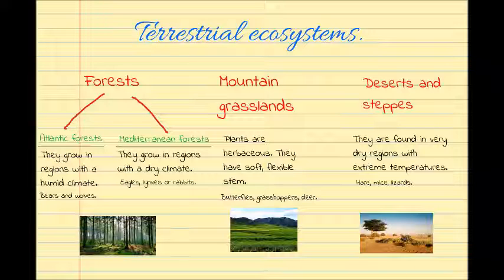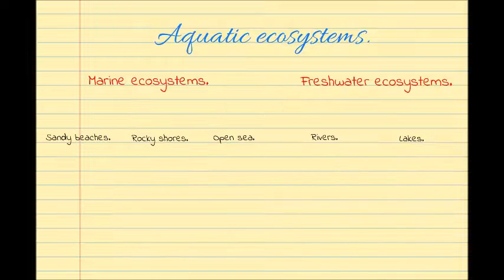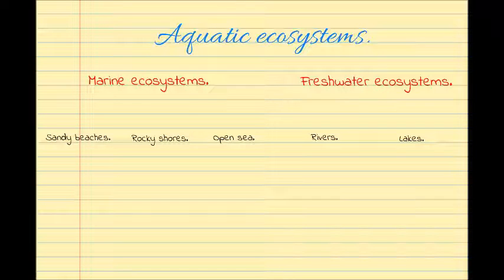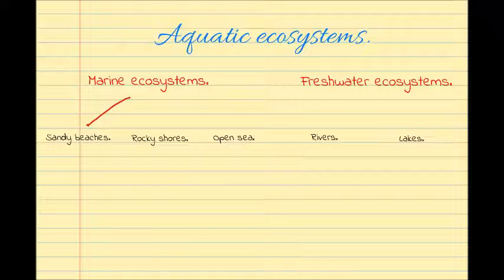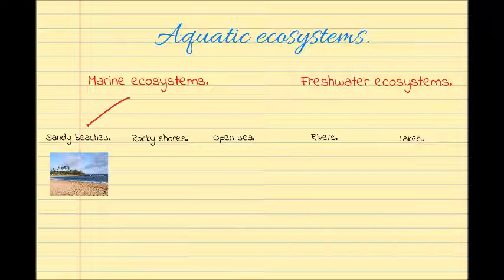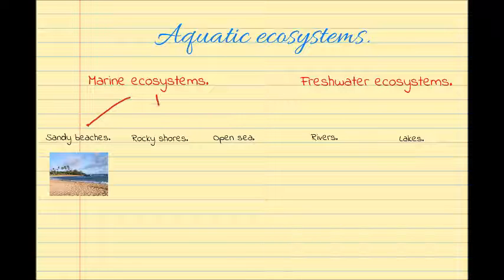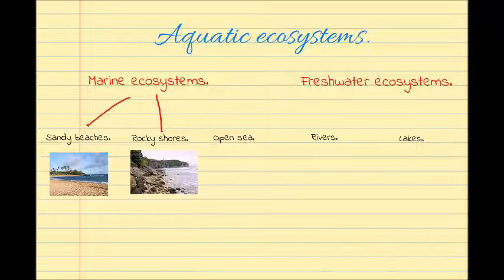After terrestrial ecosystems, we are going to study aquatic ecosystems. We will find two ecosystems: marine ecosystems and freshwater ecosystems. In marine ecosystems, we can find sandy beaches, rocky shores, and the open sea.